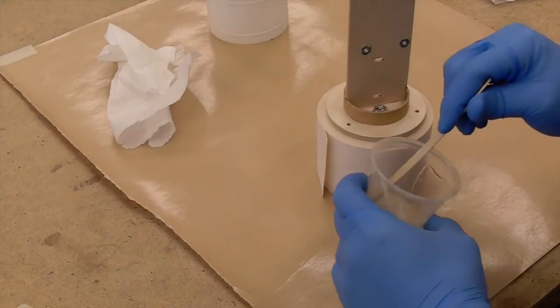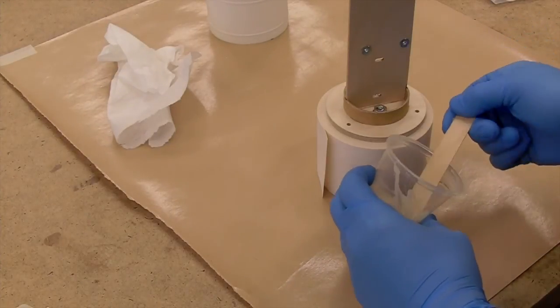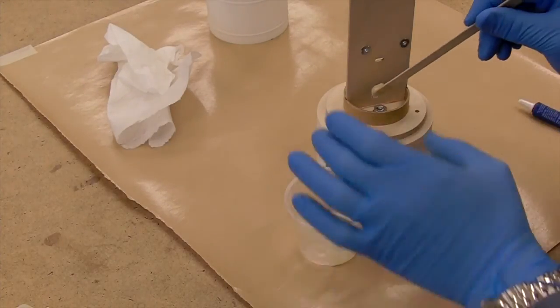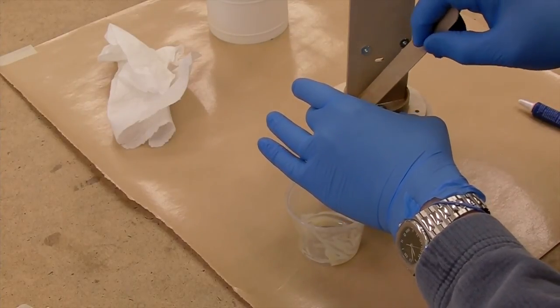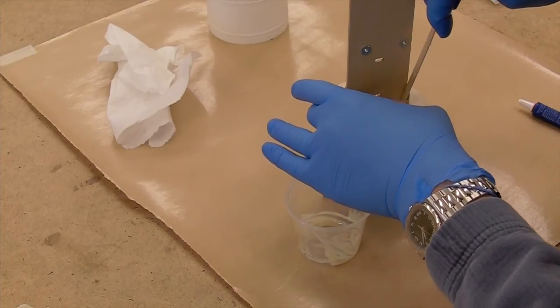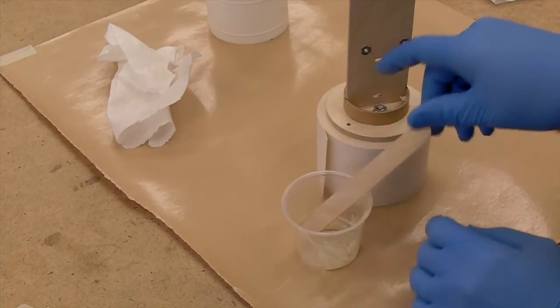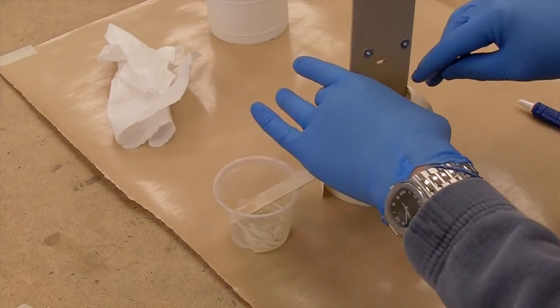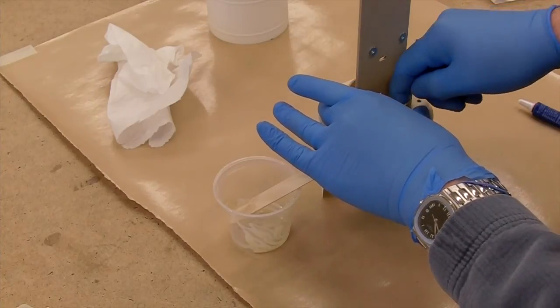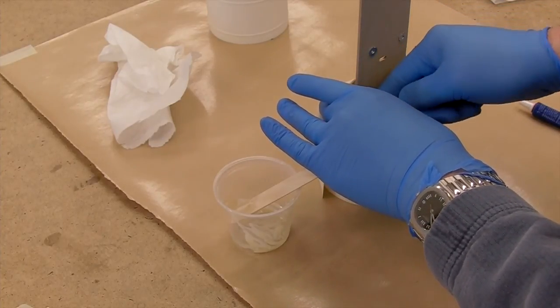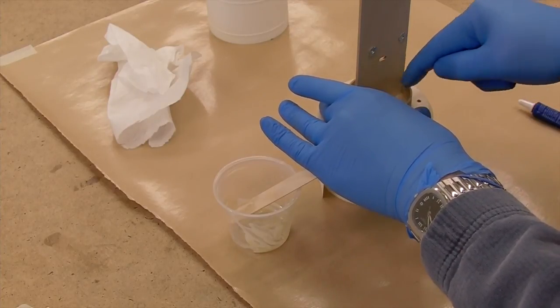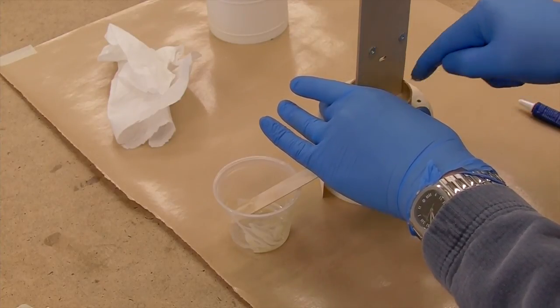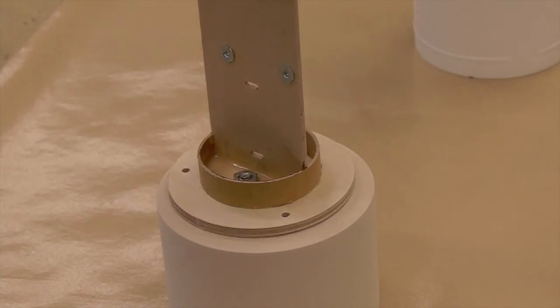And then the last step is to epoxy the plate and the ring onto the base. Again, make a little fillet all around so that the plate is permanently bonded. And then once we have our fillet formed, we let the epoxy fully cure.